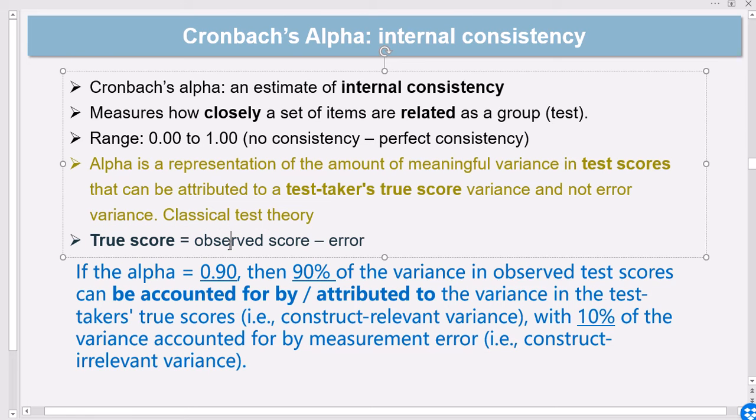What this theory predicts is that every person has a true score, a true ability—for example, true ability in reading and writing. The observed score is a representation of this true score with some error. The lower the error of measurement, the closer the observed score is to the true score.